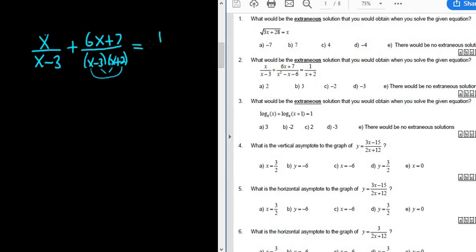And this is equal to 1 over x plus 2. So we're looking for the extraneous solution. What that means is we have to solve the equation and then check our answers. The answer that doesn't check, that's the extraneous solution.